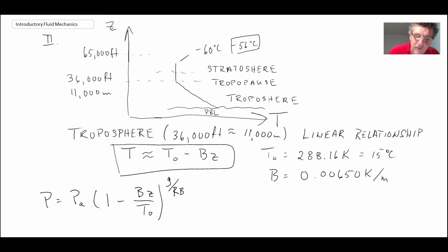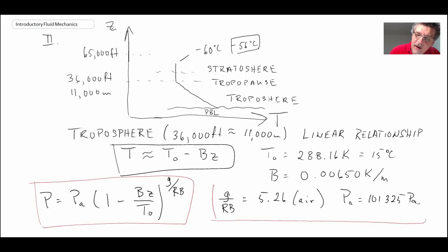And B, that would be the slope of the temperature gradient. So for air, atmospheric air, G over RB, that ratio, is 5.26. And P_A typically is 101,325 pascals. So this would be the relationship that you would use for the pressure in the troposphere as you go up. And that would apply up to about 11,000 meters or 36,000 feet.